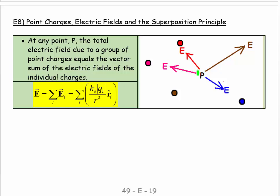so now we don't have a charge here, we just have a point in space. The total electric field due to the group of point charges equals the vector sum of the electric fields caused by the individual charges. So our total electric field equals our sum of the electric fields individually, and so it's the sum of these guys individually.